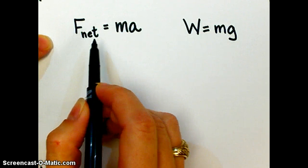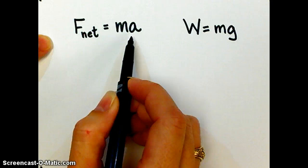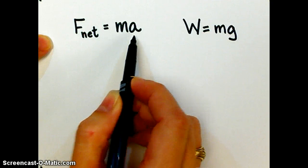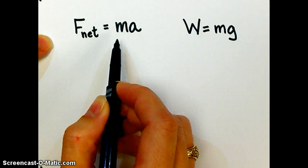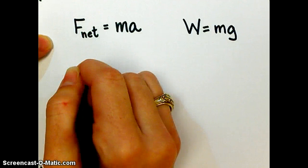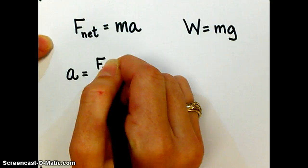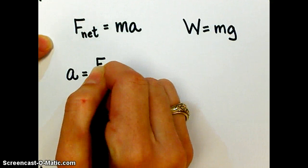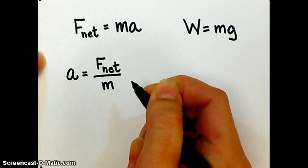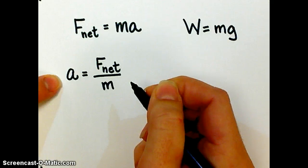Here we go. If force is equal to mass times acceleration, guys, if I divide both sides by mass, then I'm going to get what acceleration equals. Acceleration equals net force divided by mass. And this equation is actually in your notes. Remember, we highlighted it.